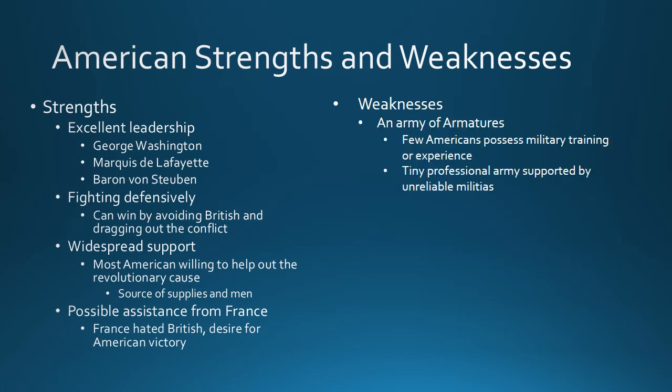But there were also serious weaknesses holding the American side back. First, the American army was more or less an army of amateurs — few Americans possessed any military training or experience. The small professional army trained by Baron von Steuben was mostly supported by lots of unreliable volunteer militias. Even General Washington complained about the militias, saying they would be blown away as easily as the wind. As soon as they faced actual British fire, instead of standing and following orders, they would just run away.